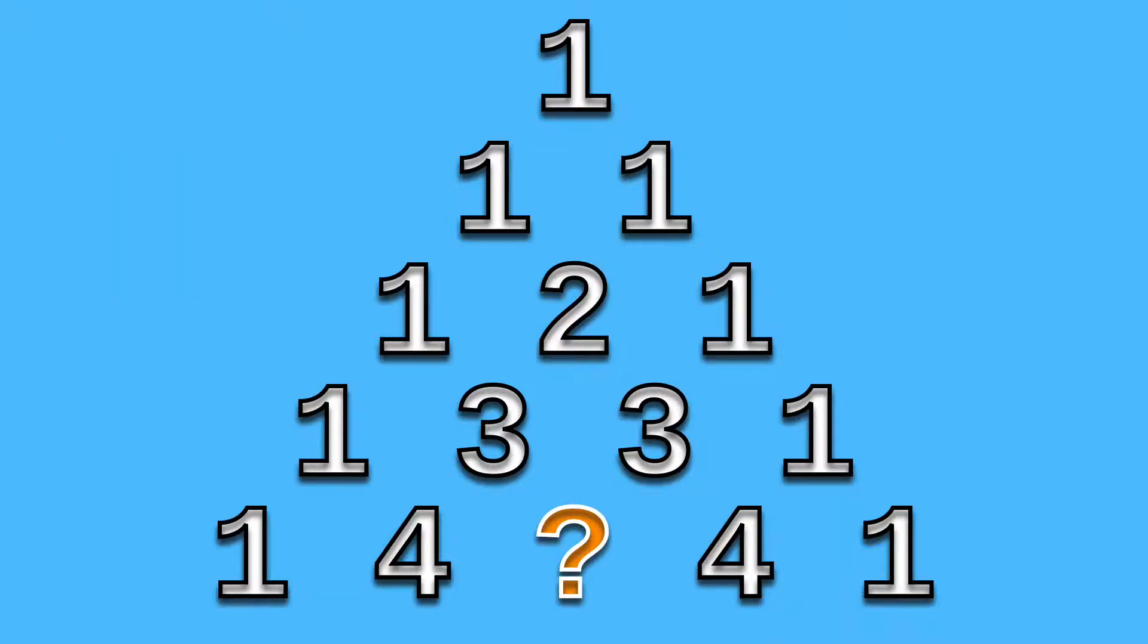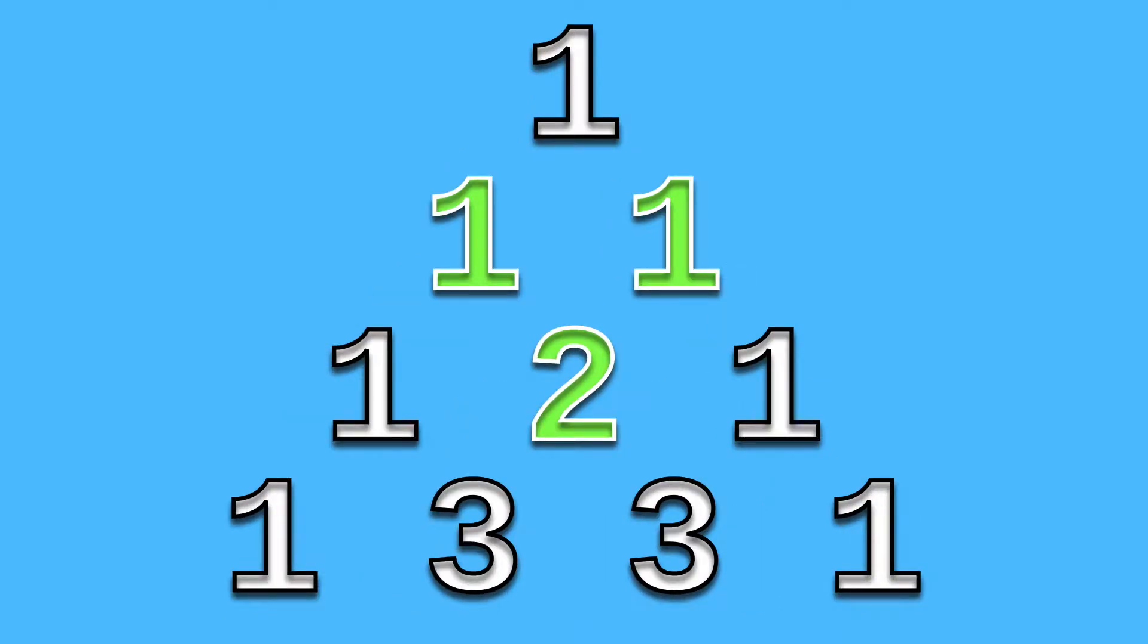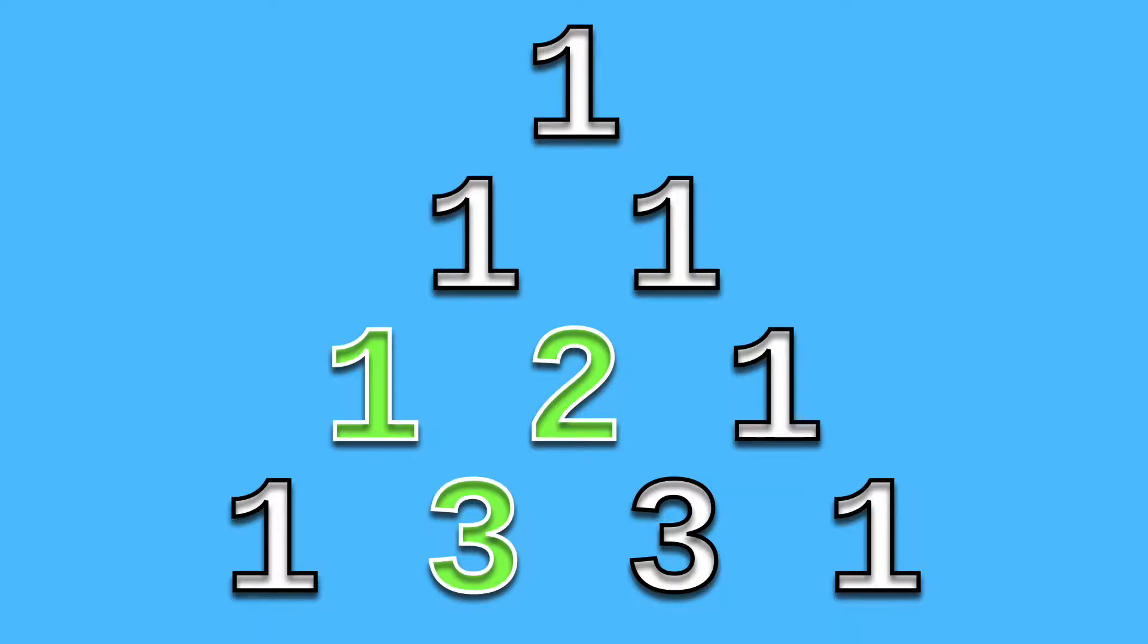The numbers of each row are created from the sum of the numbers above it. So in this case, 1 plus 1 is 2, and in another case, 1 plus 2 is 3. You can already see the pattern forming.